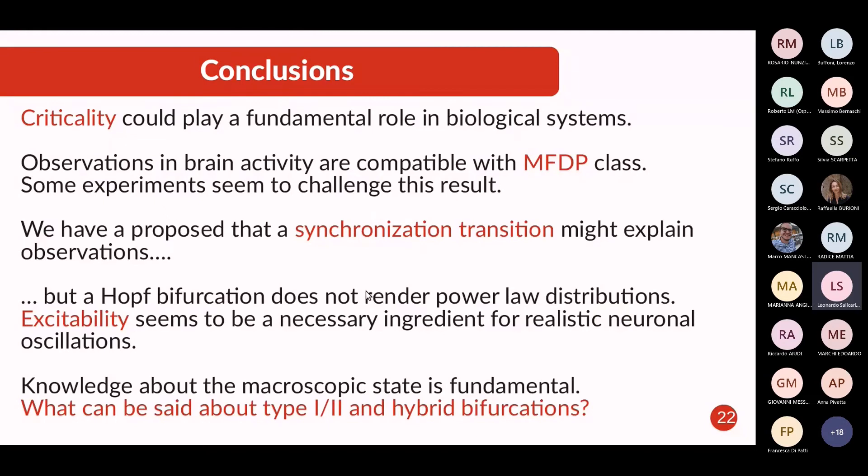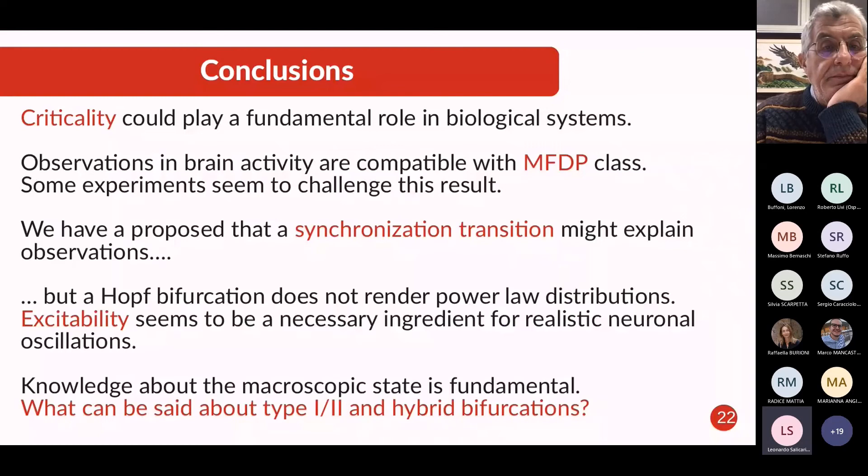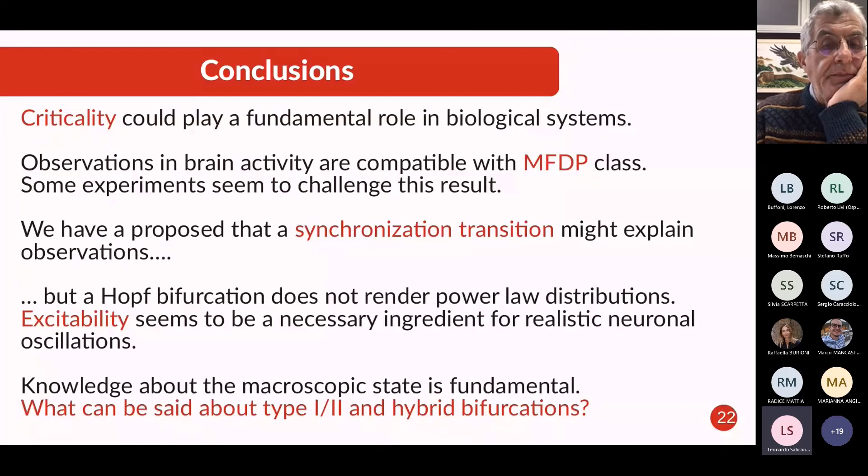So just to finish, I would say that criticality could play a fundamental role in biological systems in order to explain in a general way how they get the response to stimuli, how evolution might be selecting these states. In the case of the brain, it could be that it is working near a critical point. Up to now, the most robust result is the mean field directed percolation universality class, but there are some experiments that are challenging a bit this explanation, and we have proposed and tried to study the problem from a synchronization type perspective just because we know that synchronization is one of the key features of the brain. The result is that the Hopf bifurcation does not seem to render power loss distributions, and excitability is a necessary ingredient in order to recover this power loss. So this opens a lot of doors because of the new dynamics to study what happens in the macroscopic state.